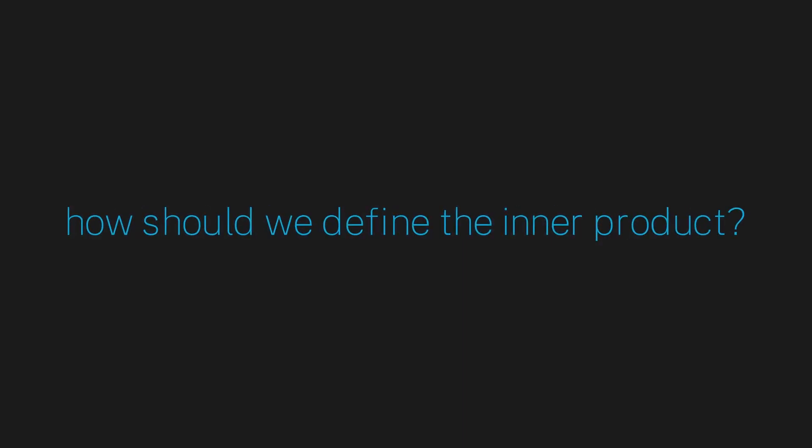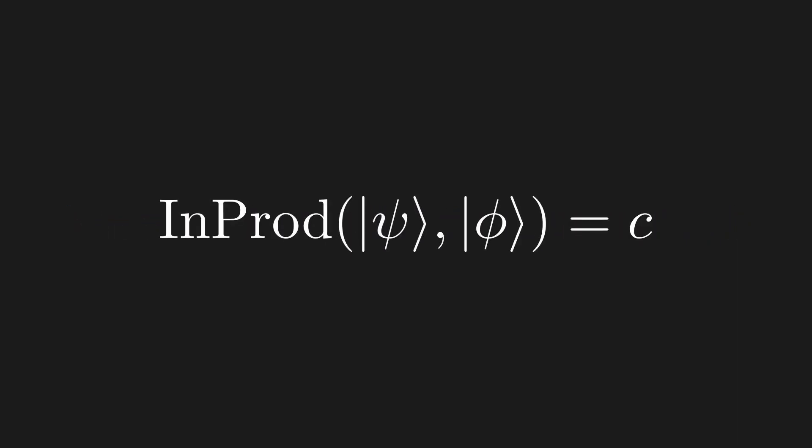So, how should we define the inner product? At its core, the inner product is a map that takes in two vectors and spits out a number, which might be complex. Now, this notation is sort of clunky, and in quantum mechanics, we put a much cleaner notation for the inner product, which is done by putting two kets together as shown.